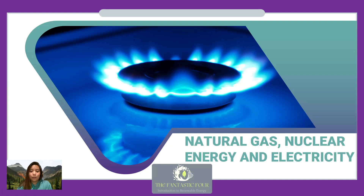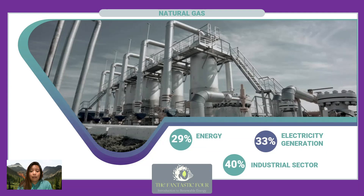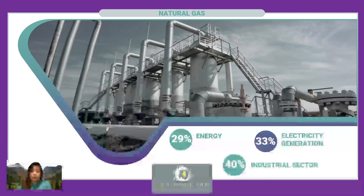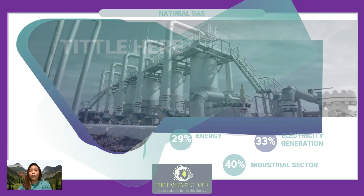The next topic is natural gas, nuclear energy, and electricity, presented by Alexis Mangamat. Natural gas provides 29 percent of our energy and is used to heat about half of homes in the United States. It is also a raw material in products such as paints, fertilizers, plastics, medicines, and antifreeze. Natural gas accounts for 33 percent of the electric power sector and 40 percent of the industrial sector energy consumption, used for process heating, combined heat and power systems, and as raw material for chemicals, fertilizer, and hydrogen.